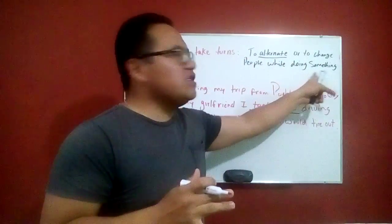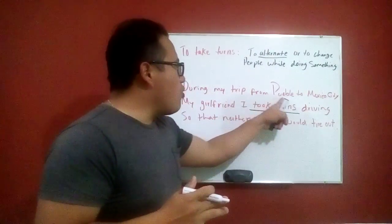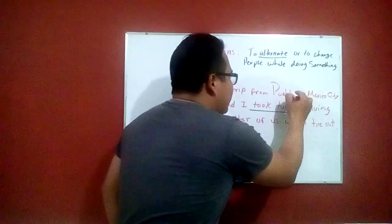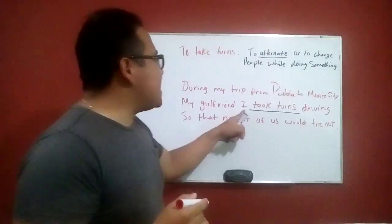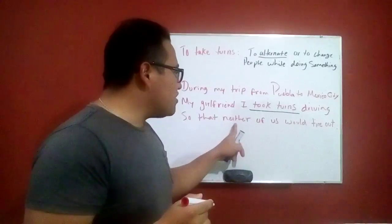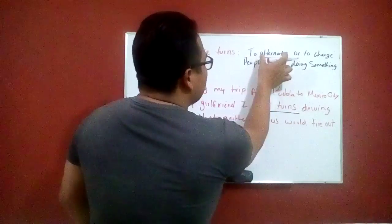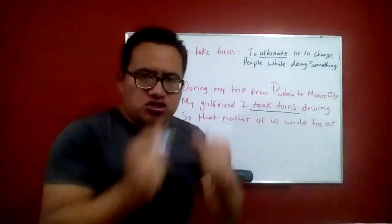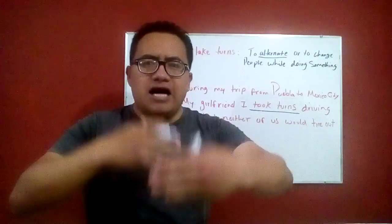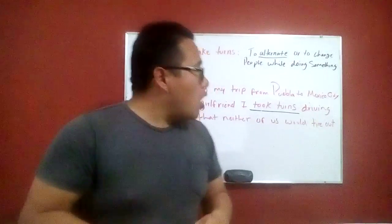Here's an example: during my trip from Puebla to Mexico City, my girlfriend and I took turns driving so that neither of us would tire out. Maybe my girlfriend drove for an hour, and after an hour we changed and I started driving — so we were alternating.